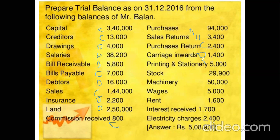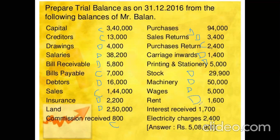Printing and stationery — debit balance, expense. Stock is an asset — debit balance. Machinery — asset, debit balance. Wages — expense, debit balance. If rent received is mentioned, it will have a credit balance because it is a gain. When nothing is mentioned, it is assumed that rent is paid, so it is a debit balance. Interest received — gain, credit balance. Electricity charges — debit balance. When the amounts are placed in the format and debit and credit balances are maintained, the total for this particular sum is Rs. 58,900.